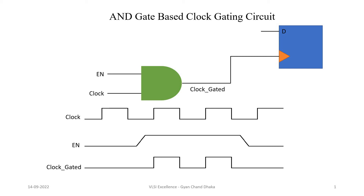Hi everyone, welcome back. In this chapter, we are going to cover timing checks with respect to clock gating circuits. If you have not gone through my previous chapter where I discussed various types of clock gating circuits used in VLSI hardware design, I would highly recommend you to first go through that chapter, so that it would be very helpful to understand the functionality of each clock gating circuit. Based on that, it would be very easy to decide the timing checks. So now let's get started.